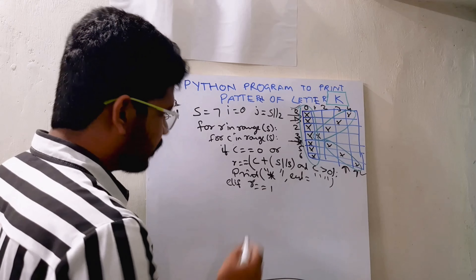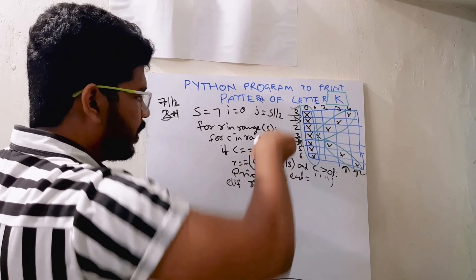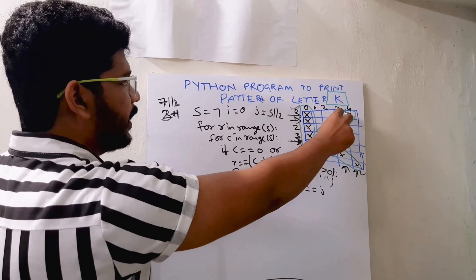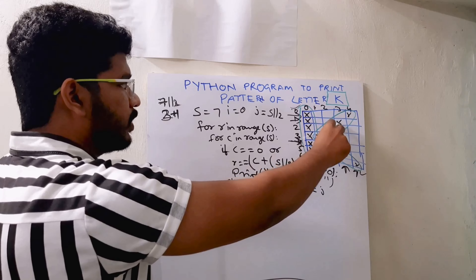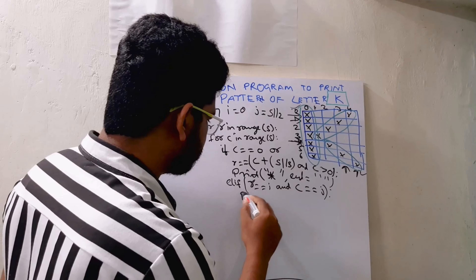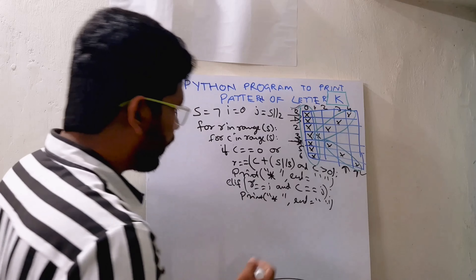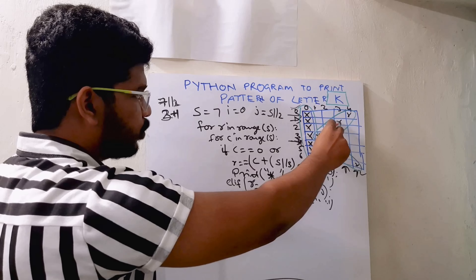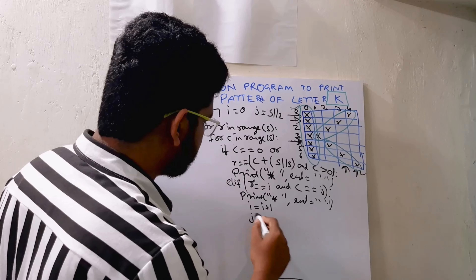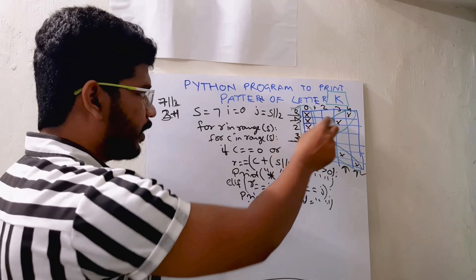The condition is: row equals i (starting at 0) and column equals j (starting at s // 2). It will start from that position, and in the next iteration the row will be incremented and column will be decremented. So in the elif block I print stars, then set i = i + 1 and j = j - 1. This way the row increments and column decrements, printing the lower diagonal.